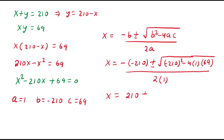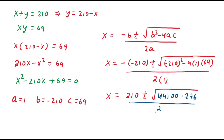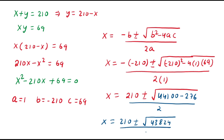Then we get x equals 210 plus or minus square root of (210 squared minus 4 times 69) divided by 2. Now 210 squared is 44,100 and 4 times 69 gives 276. So x equals 210 plus or minus square root of 44,100 minus 276, which gives 43,824, divided by 2.